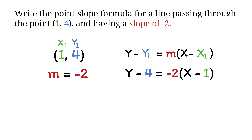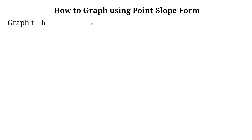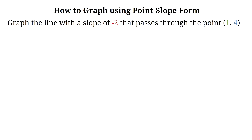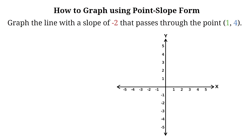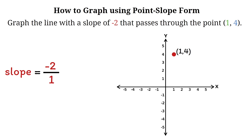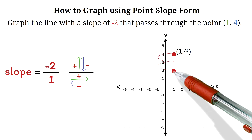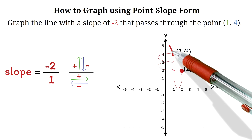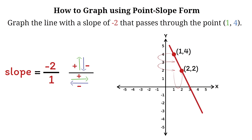Now let's graph the line that has a slope of negative 2 and passes through the point (1, 4). We start by plotting the point (1, 4) on the graph. Next, we use the slope to find the second point. The slope is negative 2, written as negative 2 over 1. Since the numerator is negative, we move 2 units down from (1, 4). Then, since the denominator is positive, we move 1 unit to the right, bringing us to the point (2, 2). Finally, connect (1, 4) and (2, 2) with a straight line — that's the graph.